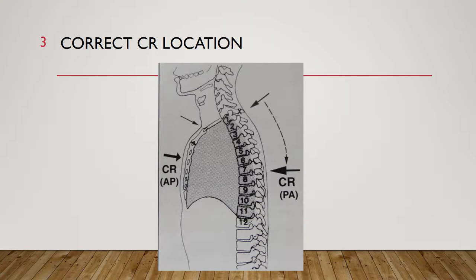For an AP chest x-ray, the central ray is going to be three to four inches below the jugular notch, and you're going to have to angle your x-ray tube about three to five degrees caudad when taking that AP chest x-ray.